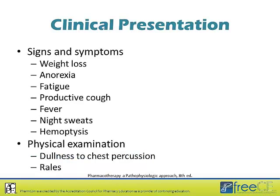When someone has tuberculosis, they present with very constitutional symptoms. The most commonly heard are weight loss, anorexia, fatigue, and a productive cough that may be hemoptysis or tinged with blood — though it doesn't necessarily have to be. Actually, one of the most common causes of hemoptysis is bronchitis, which is very common and certainly not tuberculosis. Other constitutional symptoms include fever as well as drenching night sweats. On physical examination, a physician might note dullness to chest percussion as well as rales.